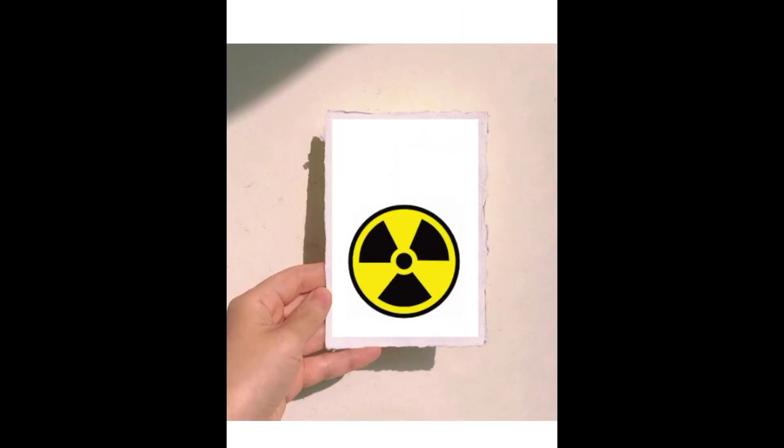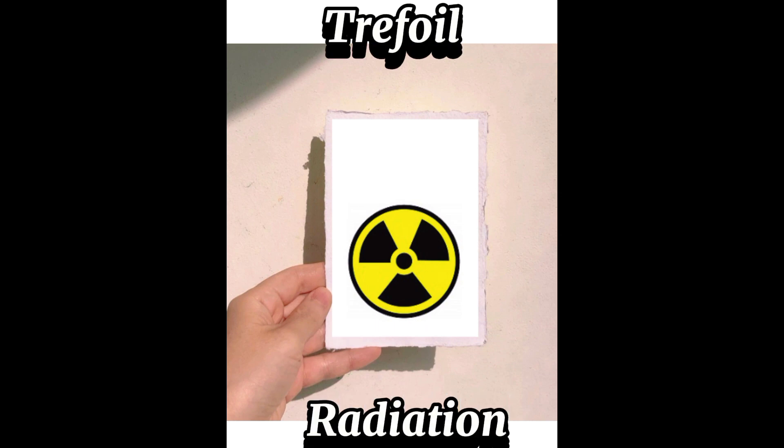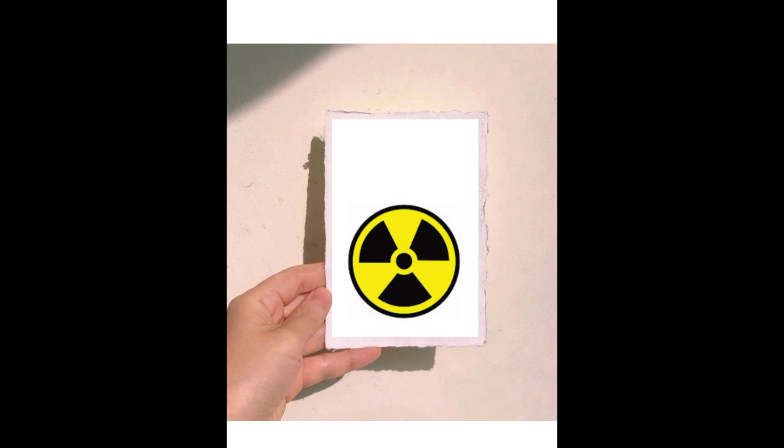Number 8, the trefoil or the radiation symbol. It was designed in 1946 at the initiative of the University of California. This trefoil symbol with three black blades radiating from a central circle signifies ionizing radiation. This type of radiation can be harmful to human health.